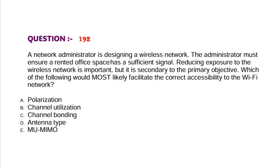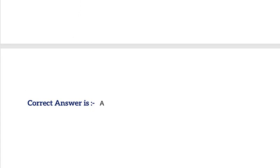Question: A network administrator is designing a wireless network. The administrator must ensure a rented office space has a sufficient signal. Reducing exposure to the wireless network is important but is secondary to the primary objective. Which of the following would most likely facilitate the correct accessibility to the Wi-Fi network? Option A, polarization. Option B, channel utilization. Option C, channel bonding. Option D, antenna type. Option E, MU-MIMO. Correct answer is Option A.